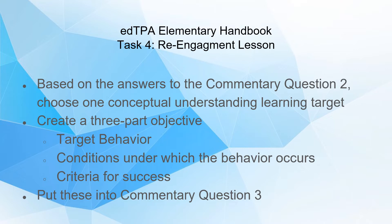If you remember, you analyzed your three focus students and figured out one conceptual understanding that they were struggling with. You're going to create a new learning target for that conceptual understanding. Create a three-part objective: the target behavior, the conditions under which the behavior occurs, and the criteria for success. These two things you're then going to put in commentary question three — those are the two responses for commentary question three.